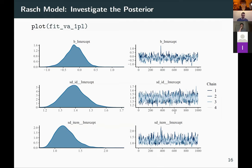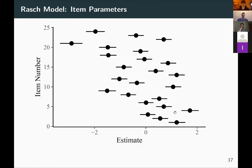We can look at the output: on the left, marginal posterior distributions; on the right, MCMC chain diagnostics. We can also plot item parameters — with item number on the y-axis, parameter estimate on the x-axis, 24 items total. Black bars represent 95% credible intervals computed from quantiles of the posterior distribution, and black dots are posterior mean estimates — the Bayesian point estimate.